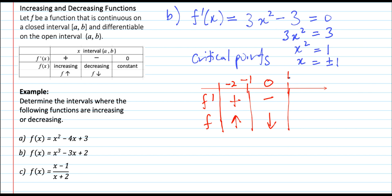Finally, choose a number greater than 1, for example 2. Substitute into f prime: 2² is 4, 4 times 3 is 12, and 12 minus 3 is positive. We only need the sign, so the function is increasing on (1, ∞).